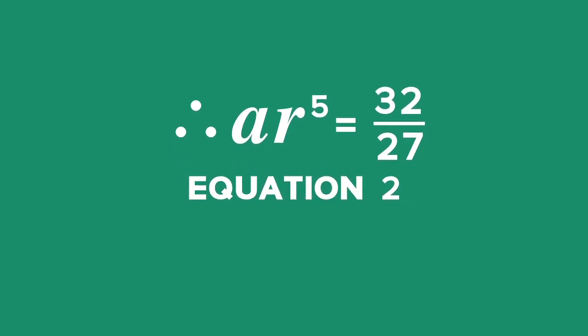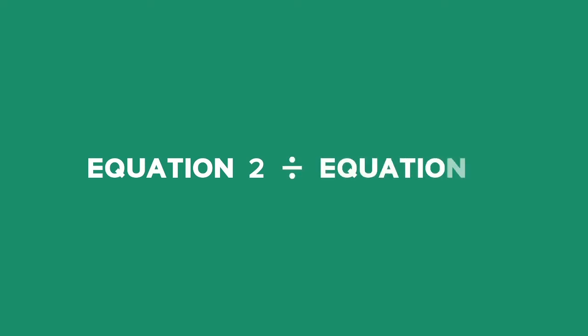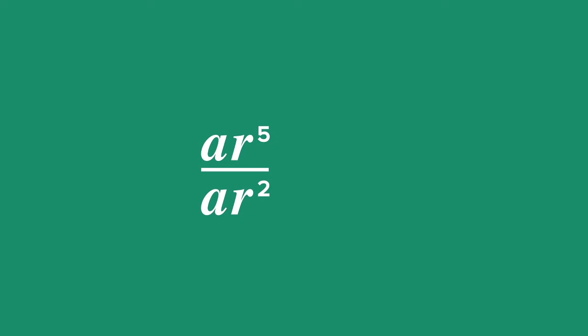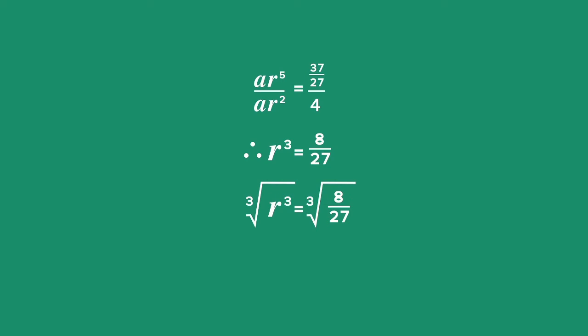The simplest way to solve these equations simultaneously is to divide one by the other, rather than using substitution. In this way, we eliminate one variable easily. Equation 2 divided by Equation 1 gives: a times r to the fifth power, divided by a times r squared, equals 32 over 27 divided by 4. Therefore, r cubed equals 8 divided by 27. Taking the cube root of both sides, r is equal to 2 thirds.